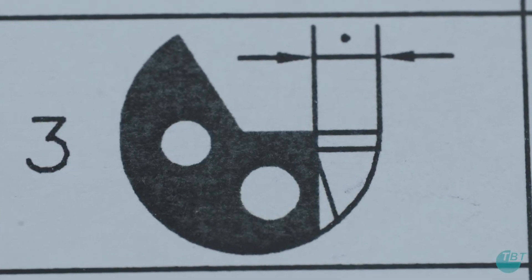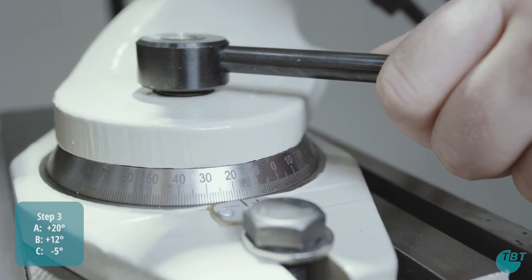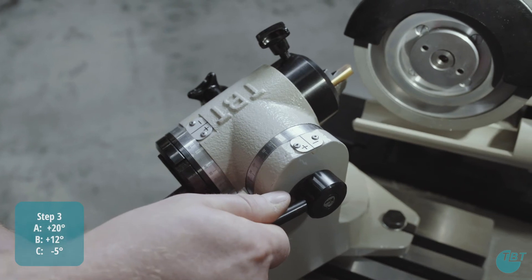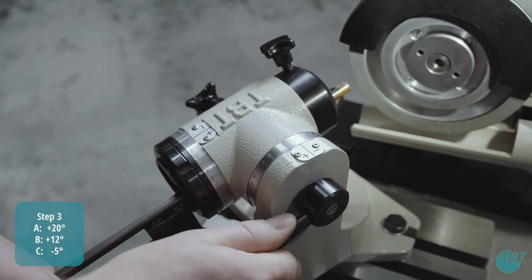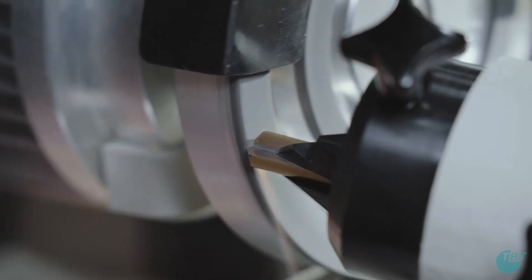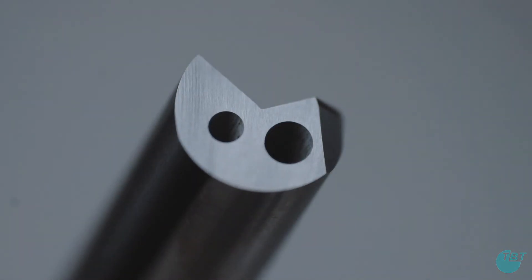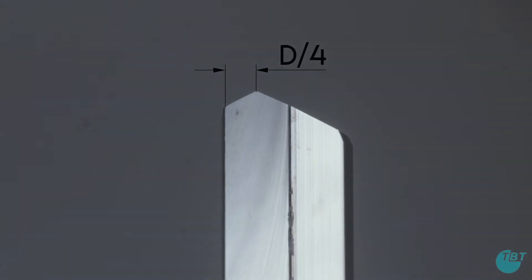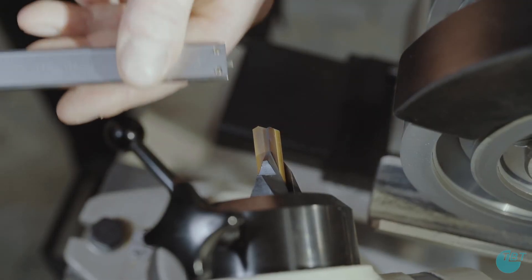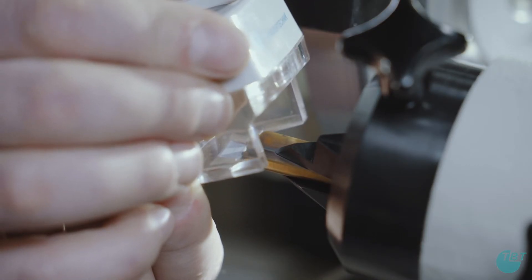To grind the inner cutting edge set the A axis to plus 20 degrees, the B axis to plus 12 degrees, and the C axis to minus 5 degrees. Pre and finish grind the tool until the position of the tip is at one fourth of the drill's diameter. You can control this measure with a caliper or with a measuring magnifier.